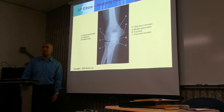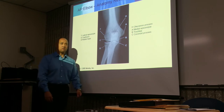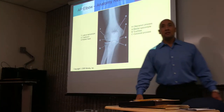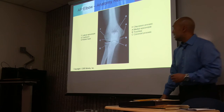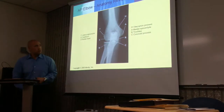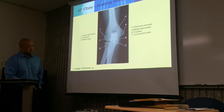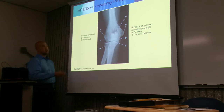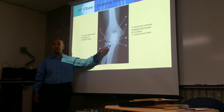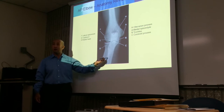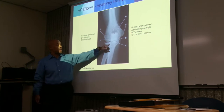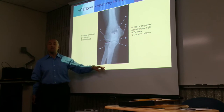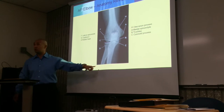Here we have an AP elbow — anterior to posterior — so the elbow is facing forward. I know this is an AP elbow because there's going to be slight superimposition of the radial head with the ulna, and slight superimposition of the radial tuberosity also with the ulna. Proximally there's superimposition of the head and tuberosity, whereas there's separation of the shaft. This is what tells me it's a true AP of the elbow.